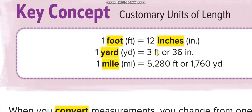Since one yard is three feet, five thousand two hundred and eighty feet equals how many yards? You are going from a smaller unit to a larger one, so in that case we divide — divide by three. Five thousand two hundred and eighty divided by three gives us one thousand seven hundred and sixty yards.